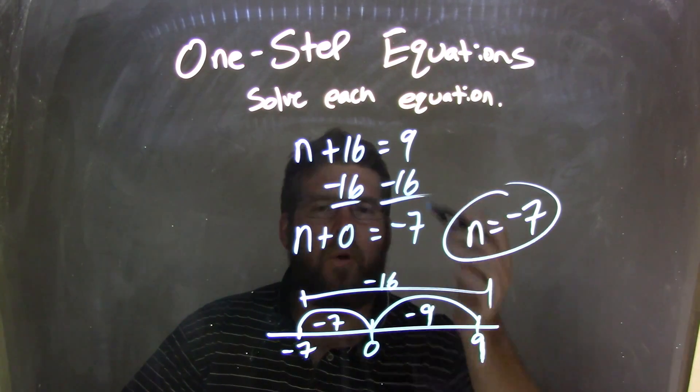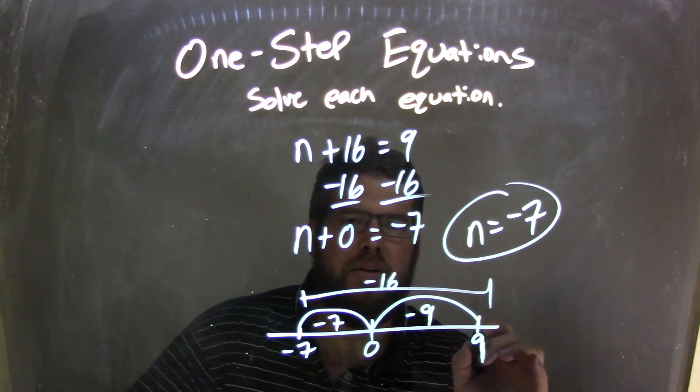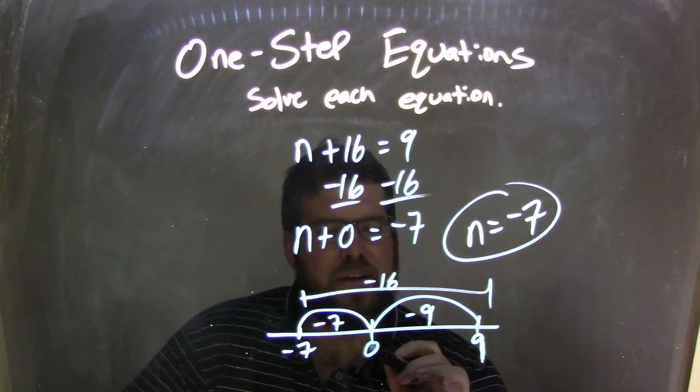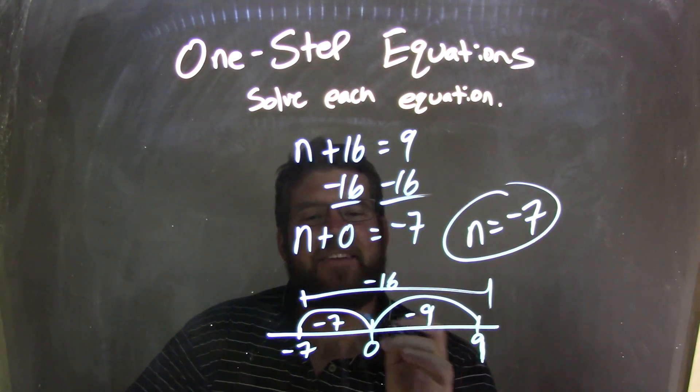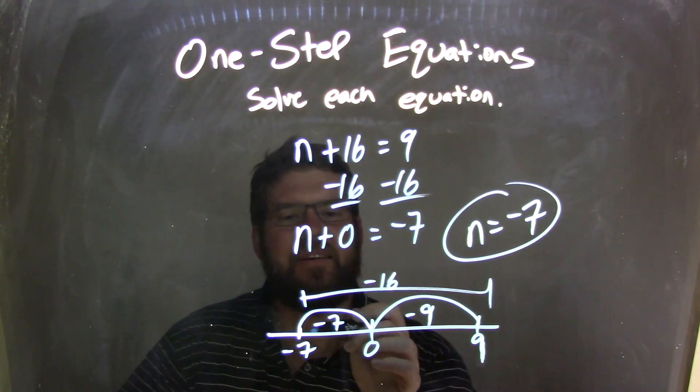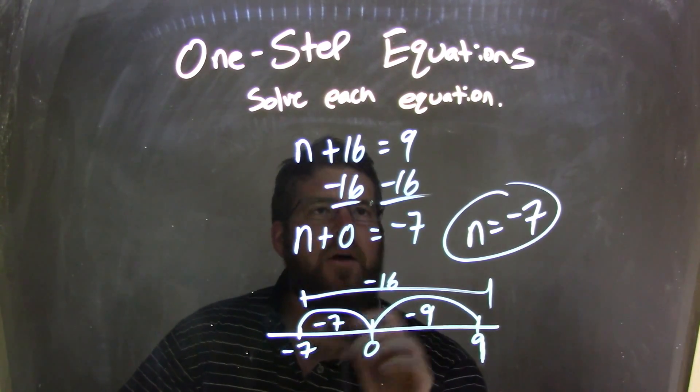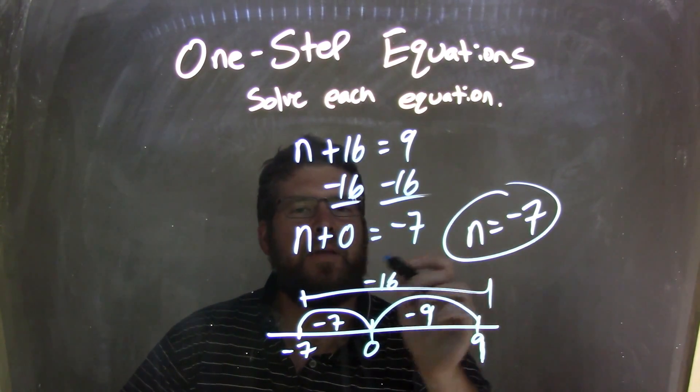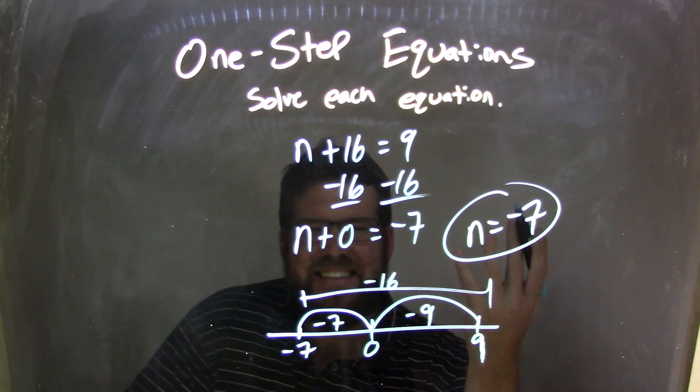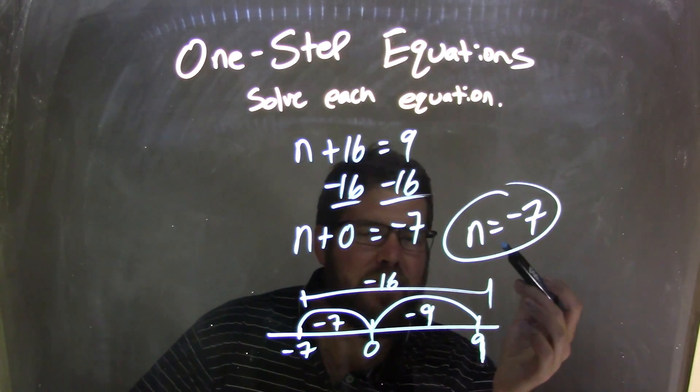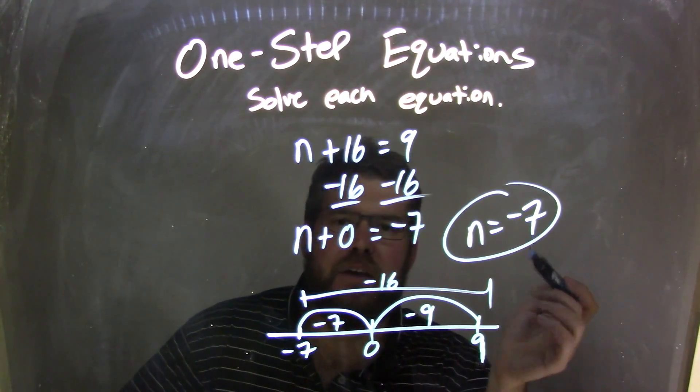Now, I have 9 minus 16. One of the tricks I like to do is I started with a number line here at 9. I subtracted 9 units to get to 0, then subtract 7 more units to get a total subtraction of 16 units. So, our final part here is at negative 7. So, 9 minus 16 is negative 7. Don't need the plus 0, because adding 0 doesn't change anything. So, our final answer is n equals negative 7.